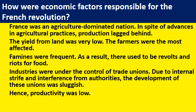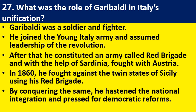What was the role of Garibaldi in Italy's unification? Garibaldi was a soldier and fighter. He joined the Young Italy army and assumed leadership of the revolution. After that, he constituted an army called the Red Brigade and, with the help of Sardinia, fought with Austria.